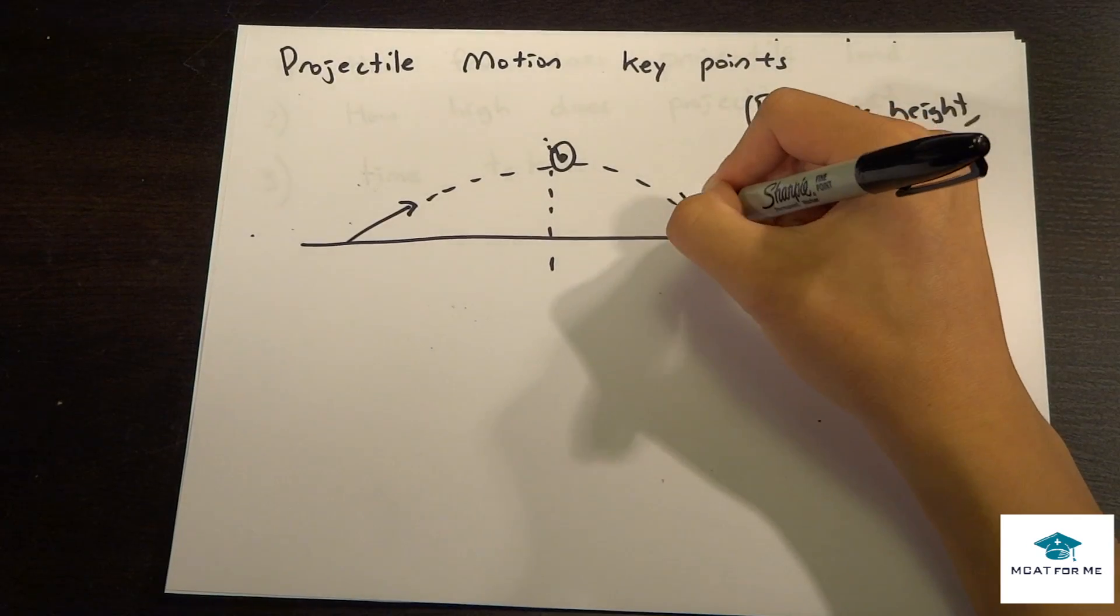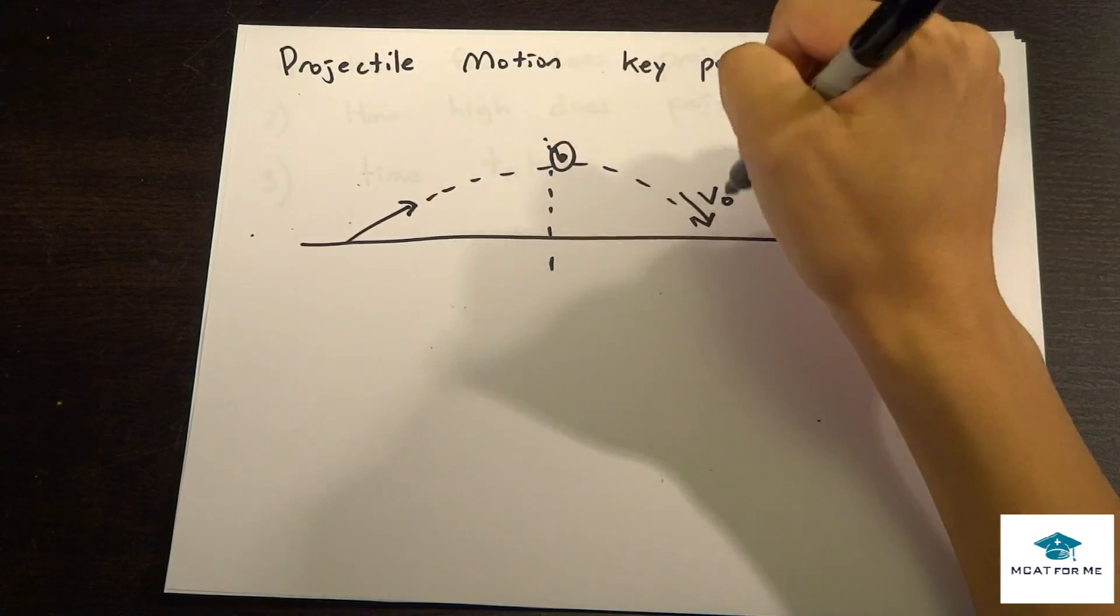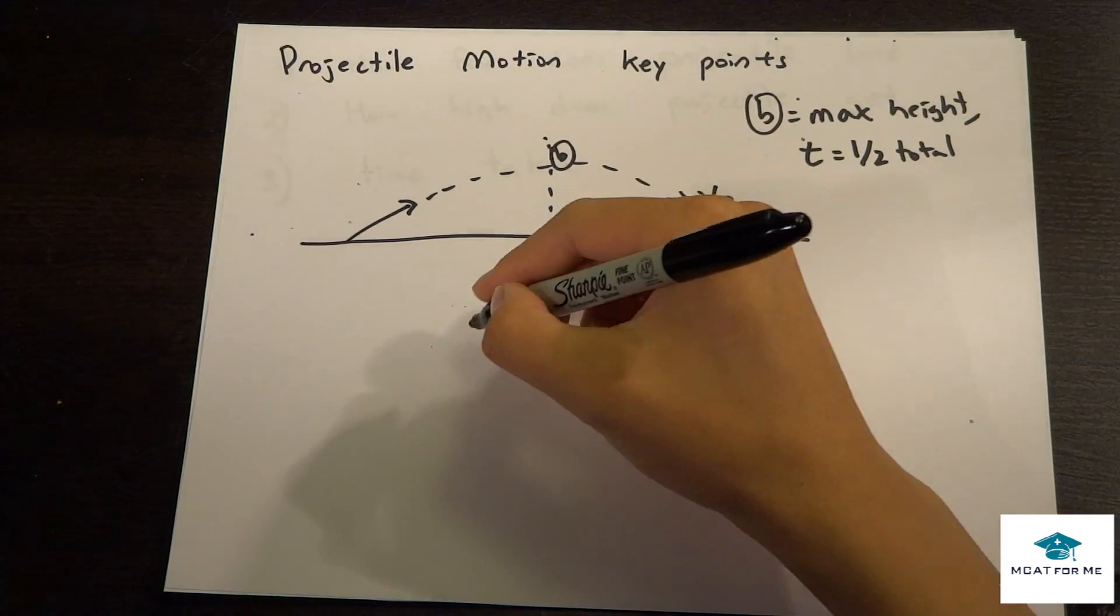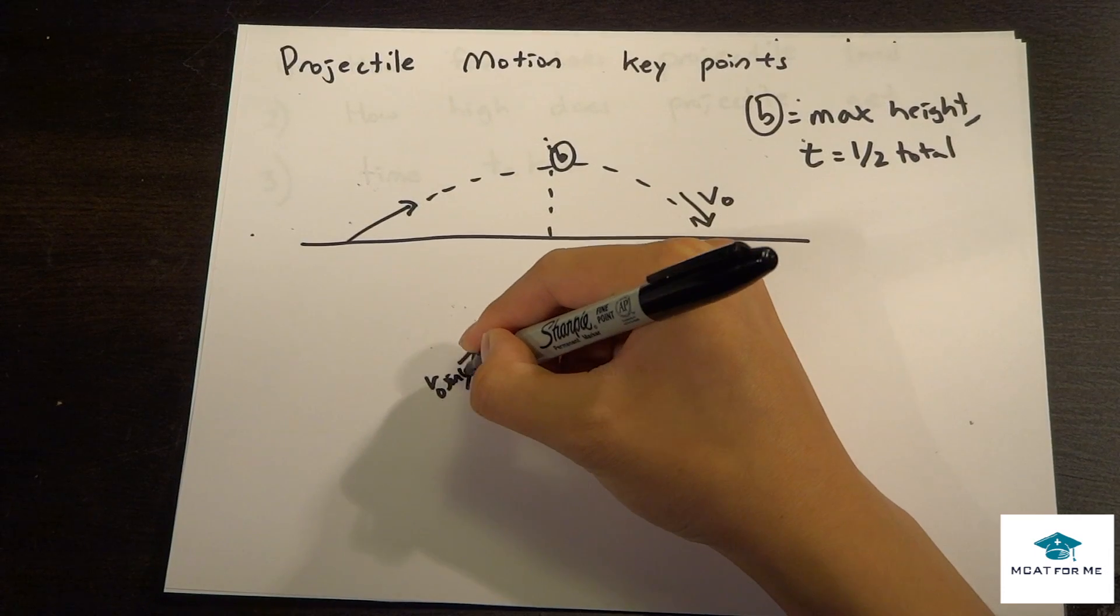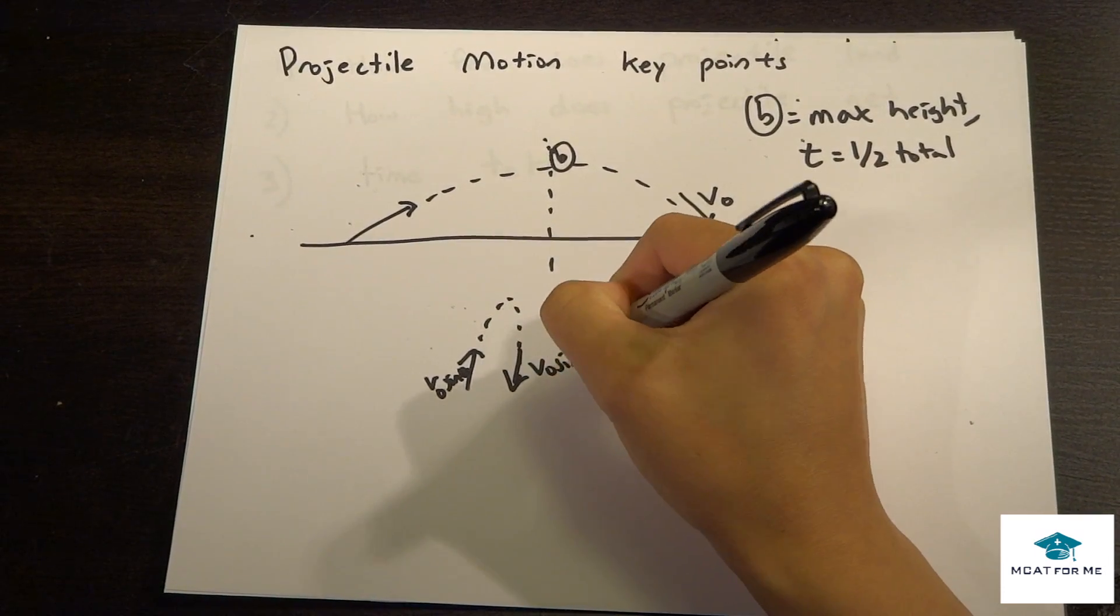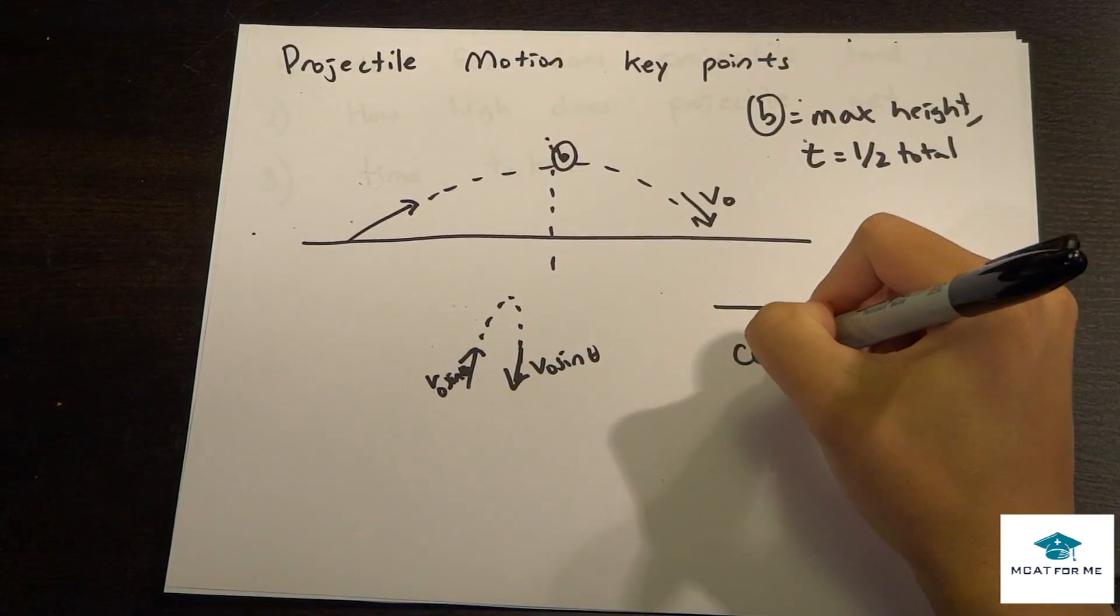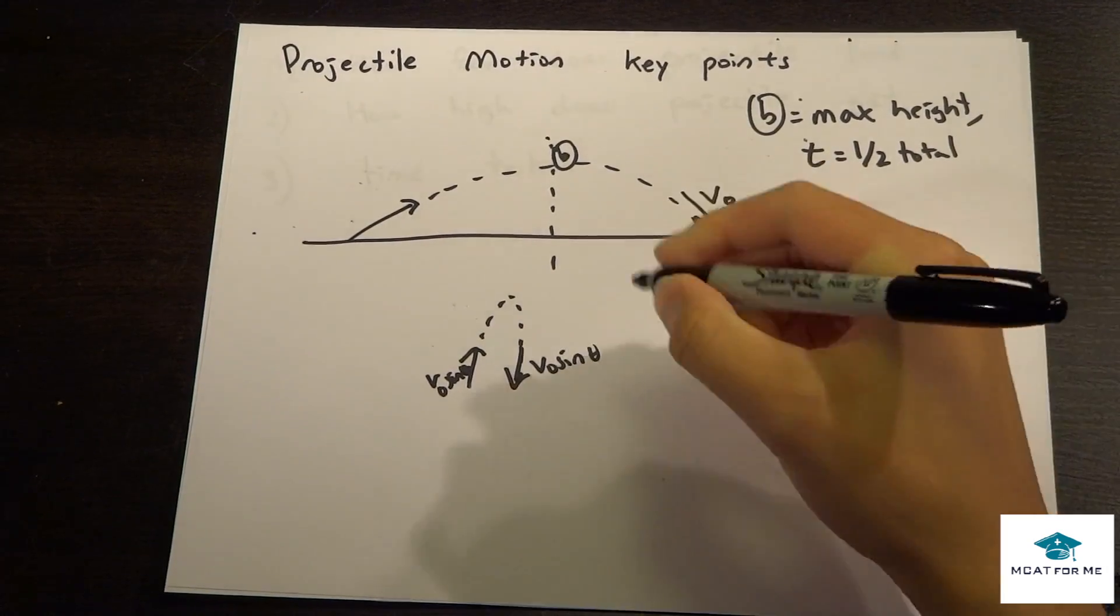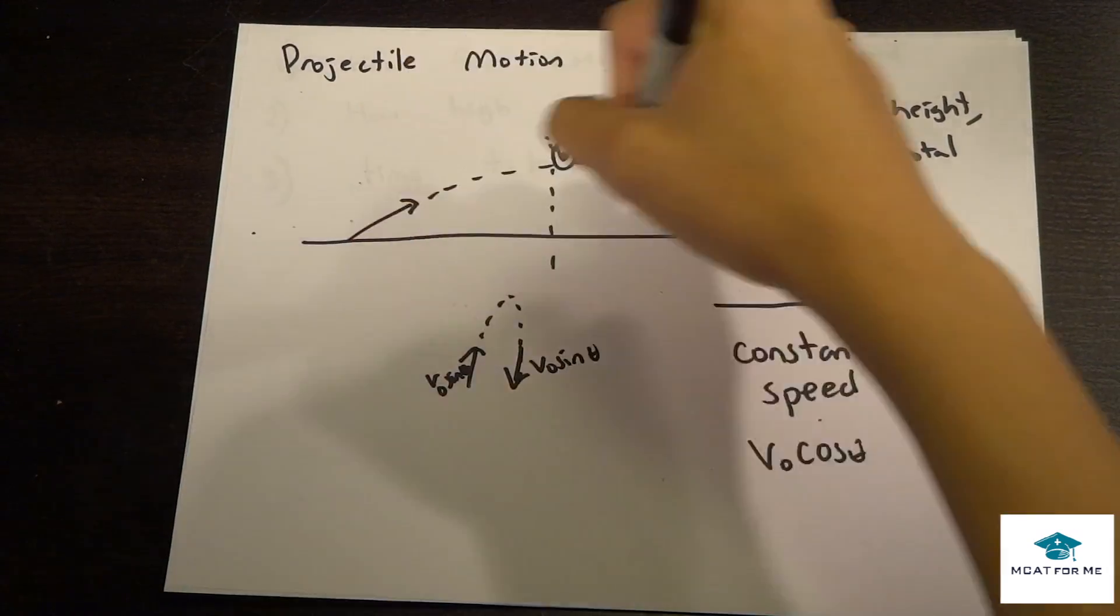Also, this v0 is going to be the same as that initial v0 but in that direction. The same rules apply. If we have it going up in the air, on its way back down it will be going v0 sine theta in the same direction. Also horizontally, it is a constant speed. v0 cosine theta is constant throughout the horizontal.